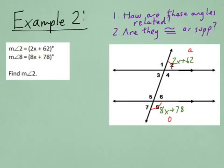Again, this just verifies what we already know. From there, I can write my equation. I can say 2x plus 62 plus 8x plus 78 equals 180 degrees.